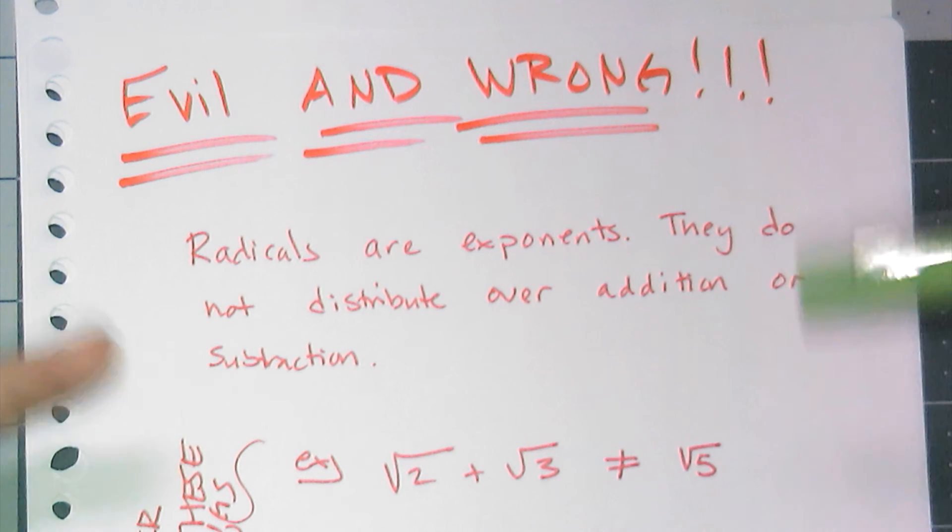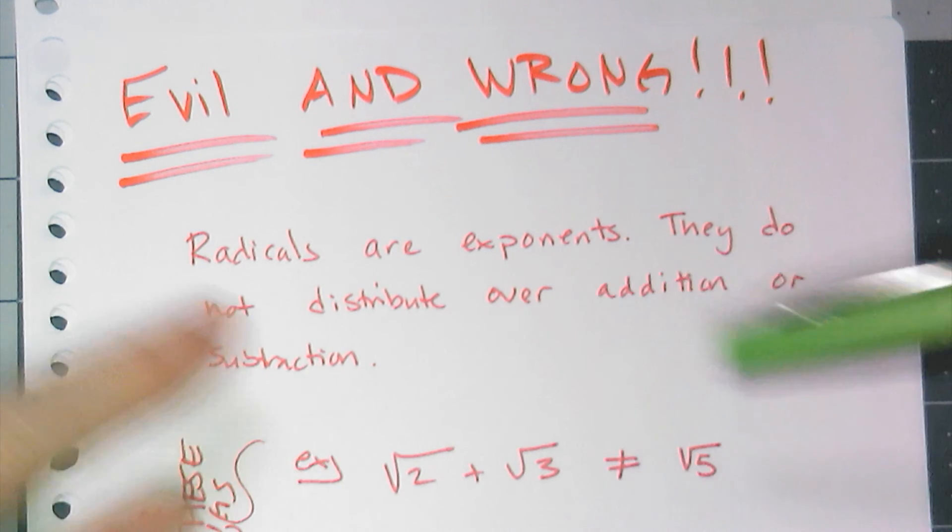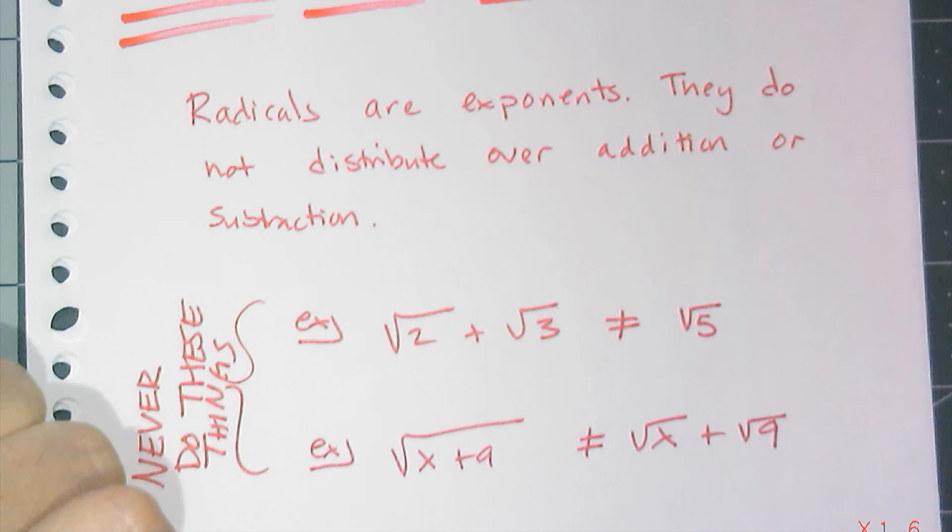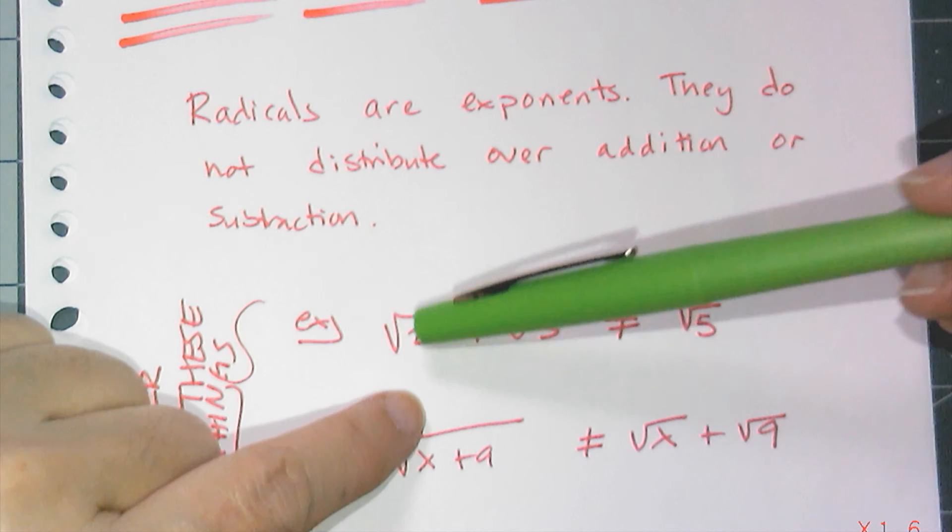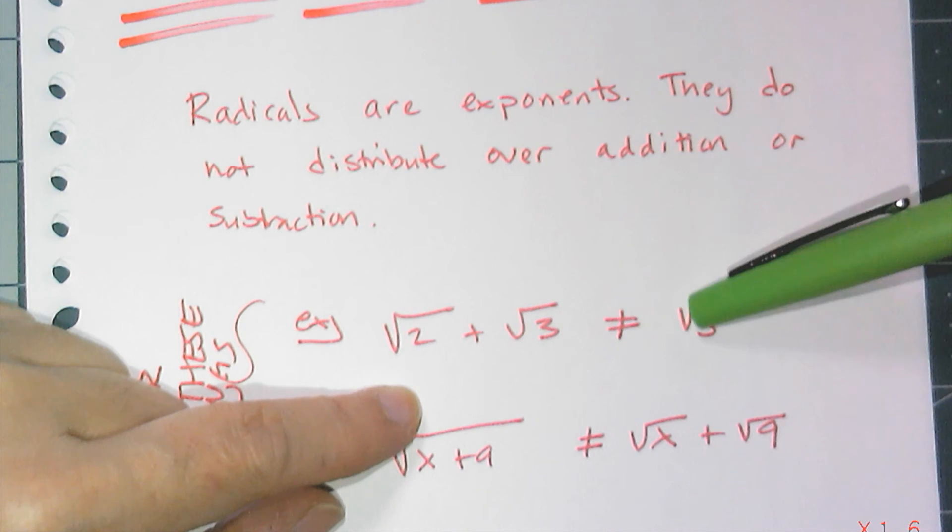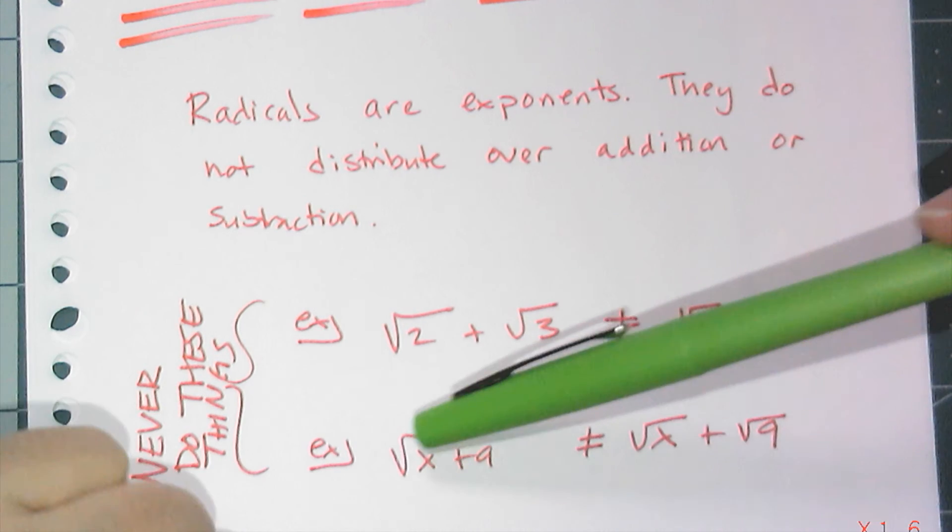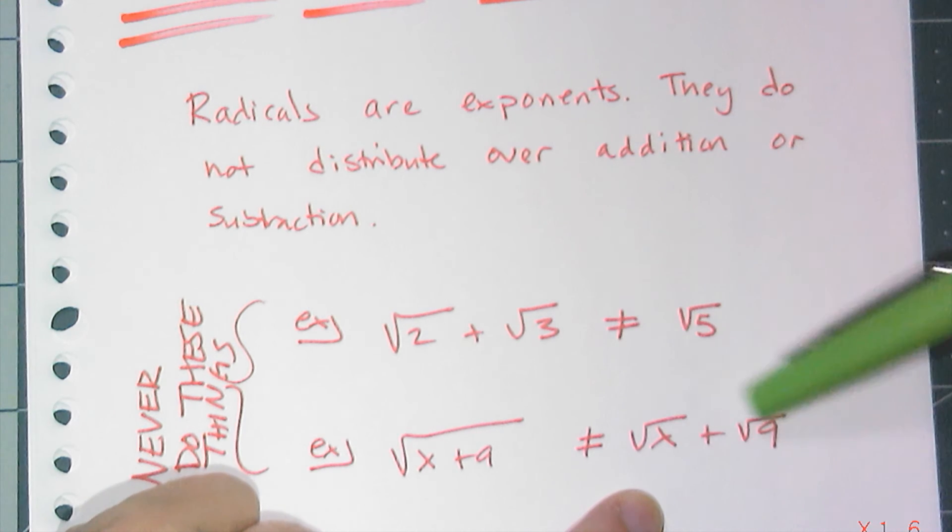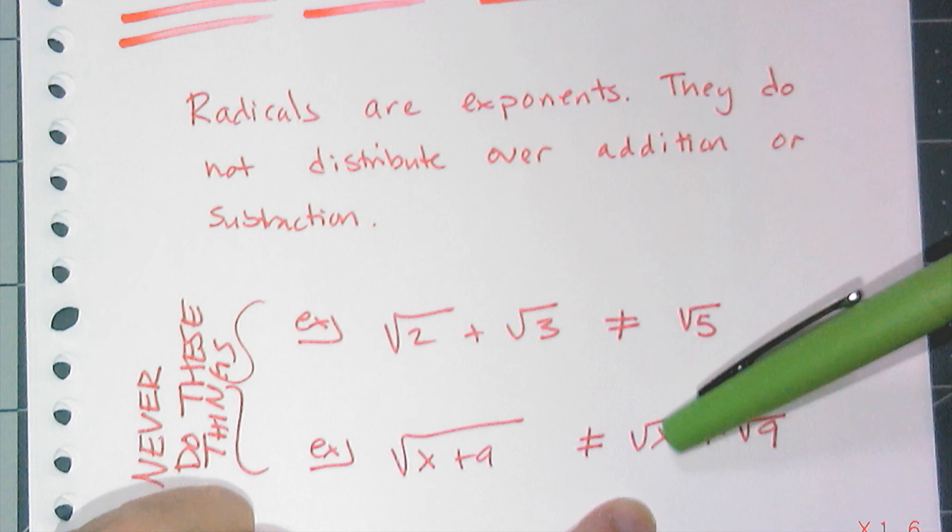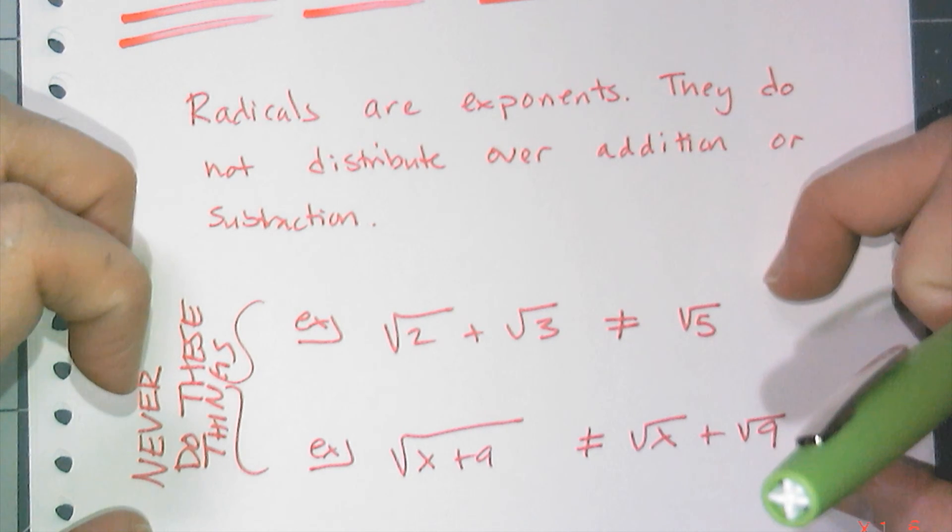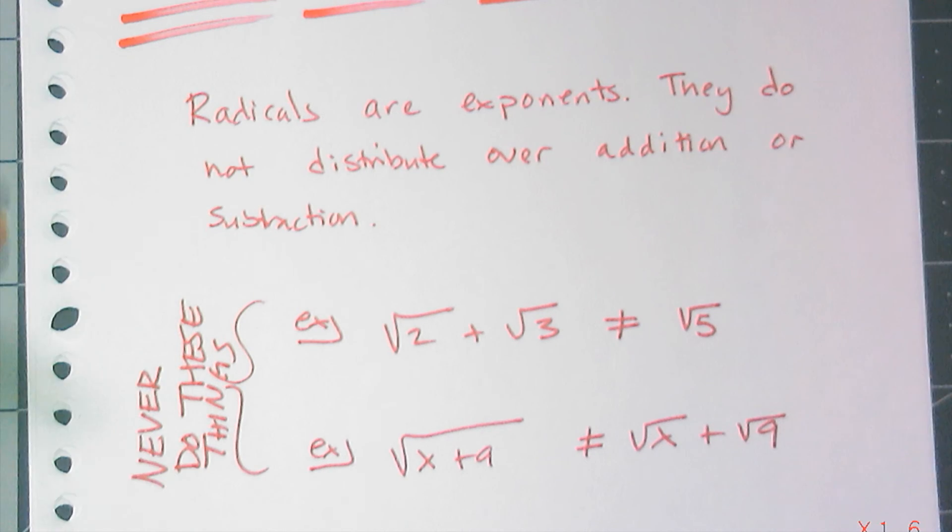What that means is there is no rule to combine square roots with addition or subtraction. I cannot say the square root of 2 plus the square root of 3 is the same thing as the square root of 5, because it's not. Those are not equal. And I cannot take the square root of x plus 9 and split it up into the square root of x plus the square root of 9. This is also not possible.